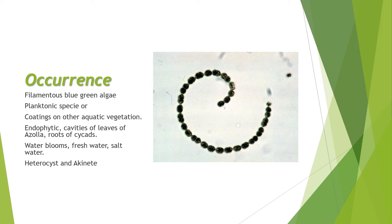Coating on other aquatic vegetation means they can cover other vegetation and form a coating or network over them. They can also exist endophytically, living inside the body of other organisms or plants — for example, in the cavities of the leaves of Azolla and the roots of cycads. Water blooms is the most important characteristic of Anabaena; it forms water blooms, which is a significant feature though not beneficial for water bodies.